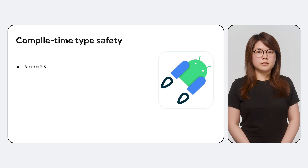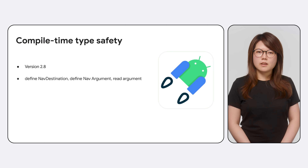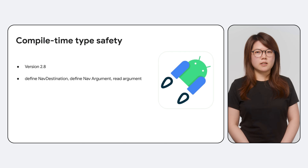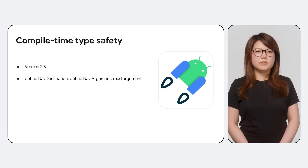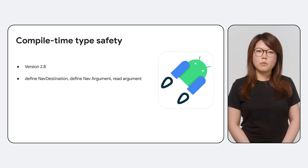In Navigation version 2.8, we added new type safe APIs to the library. The goal of type safe APIs is to provide compile time type safety in Kotlin DSL when you define your nav destinations and arguments, and when you read passed in argument values.